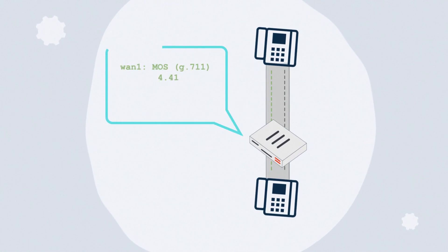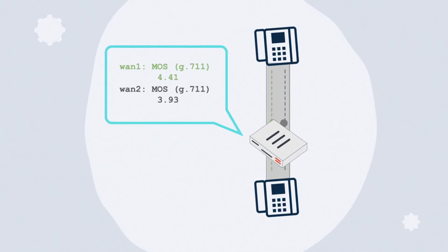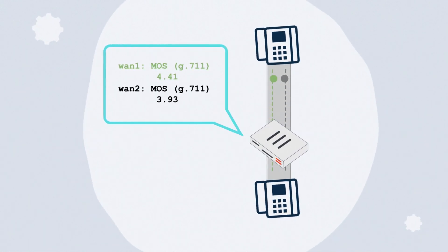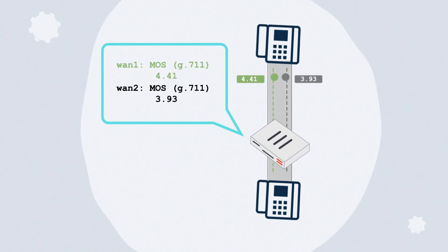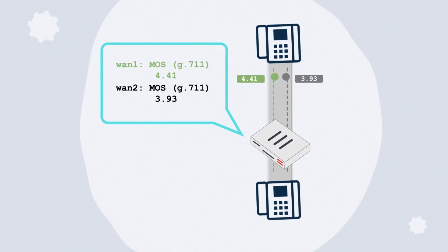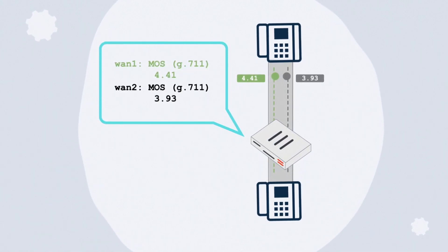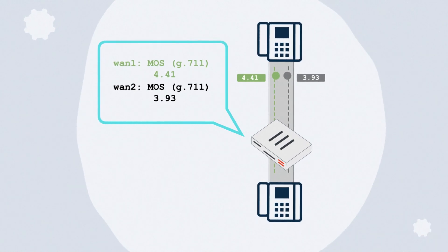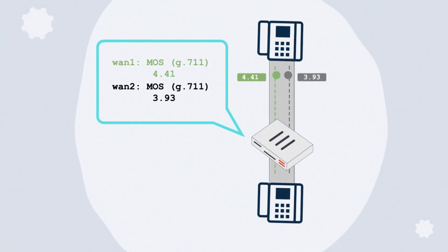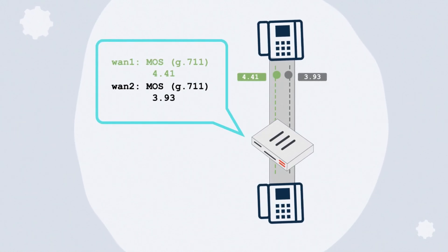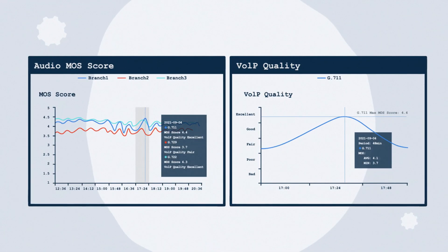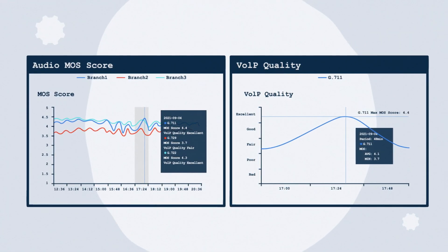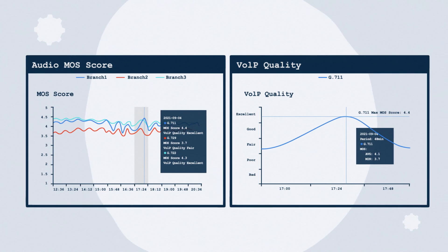Previous Fortinet Secure SD-WAN releases introduced per-application performance monitoring for SaaS applications. FortiOS 7.2 builds on this by introducing MOS scoring and monitoring of voice and video traffic. MOS-based SLA thresholds allow you to set minimum requirements for a link based on the user experience.